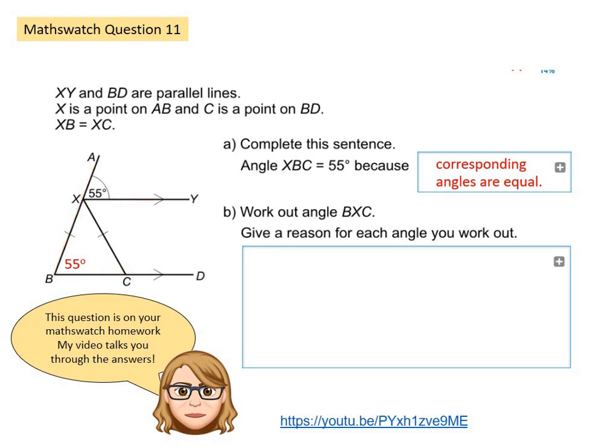For part B you are asked to work out angle BXC. So if I started at B and went to X and then continued on to C, I'm looking to find this angle here which is the top of an isosceles triangle. I know that base angles on an isosceles triangle are equal so the angle at the bottom would also be 55 degrees.